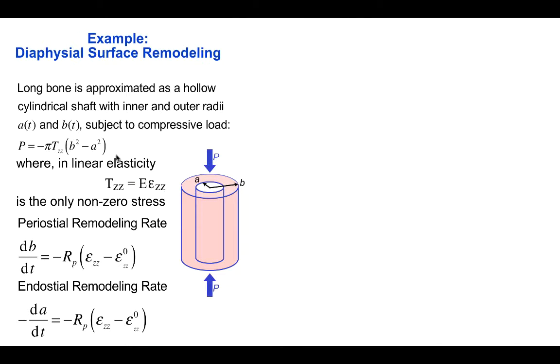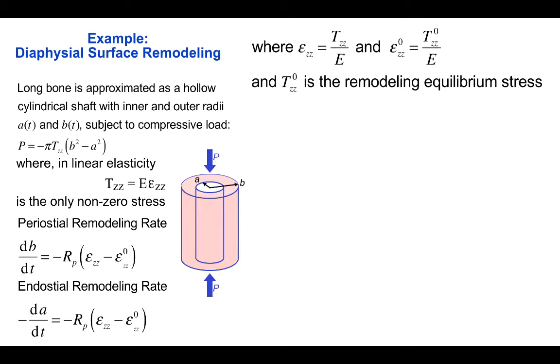So here are the equations we just saw. Now, making use of the stress-strain relation where ε_zz is T_zz/E, therefore ε_zz⁰ is T_zz⁰/E, where T_zz⁰ is the remodeling equilibrium stress.